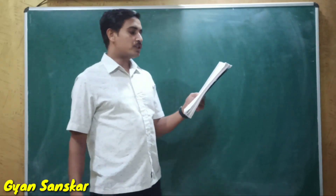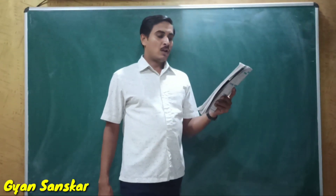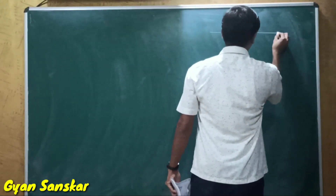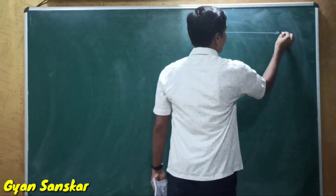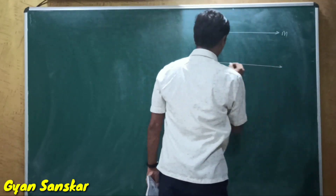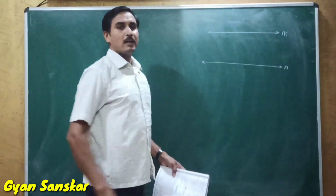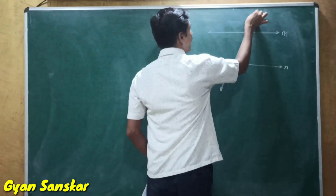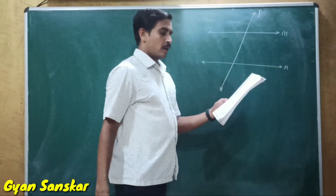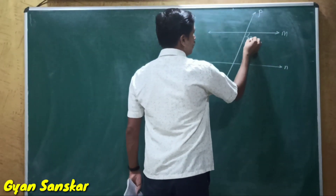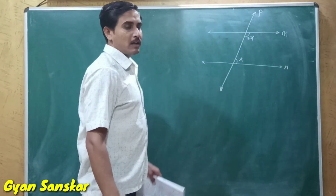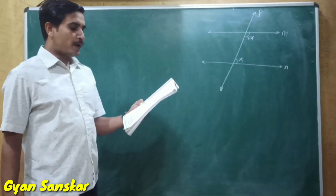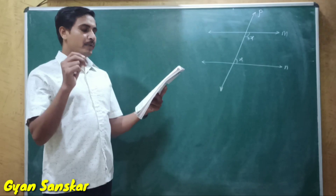Here the first question is: choose the correct alternative. In the adjoining figure, line yam is parallel to line yam. We will draw the lines. This is line yam and it is parallel to line yam. They have taken a transversal named P, and two interior angles are shown with measures 3x and x. So we have to find out the value of x.